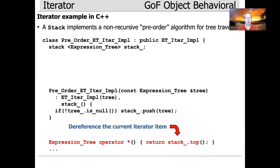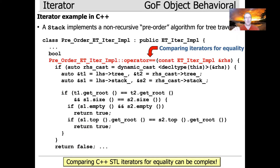If you think about pushing an item onto the stack, then if you go ahead and dereference that once the iterator is created, you'll get back the top item. So the dereference operator for the pre-order traversal will always get the current top of the stack. Things get a little tricky — it's interesting to compare and contrast the complexity of implementing an iterator based on STL semantics versus iterators based on Java semantics. Java semantics are much, much easier to implement.